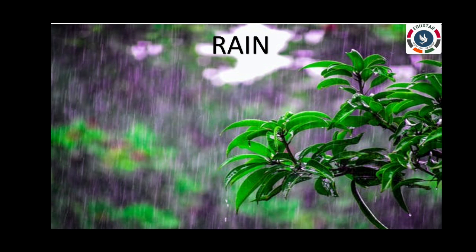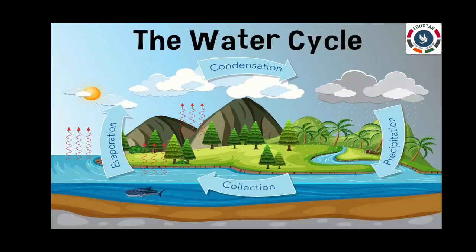Rain. When water vapour condenses and falls to the ground in the form of drops of water, it is called rain. So today we will see about water cycle.